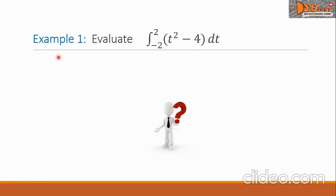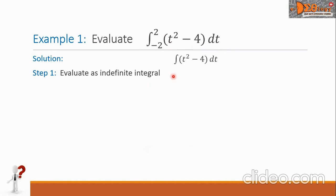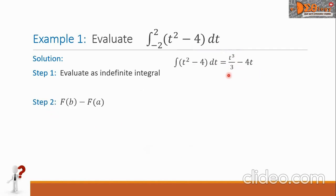Let's see Example 1: evaluate the integral from negative two to positive two of the function t squared minus four, dt. For our solution, let us evaluate as an indefinite integral. So we have the integral of t squared minus four dt equals t cubed over three minus four t. Now for step two, we evaluate the resulting function using the limits of integration, negative two and two. This equals F of two minus F of negative two.